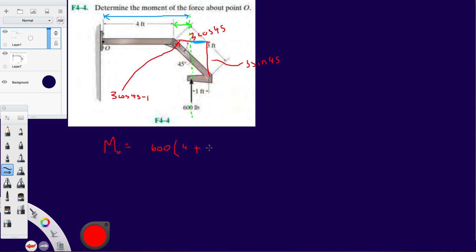So it's going to be 4 plus 3 cos 45 minus 1. Let's just leave it in parentheses even though it doesn't matter.